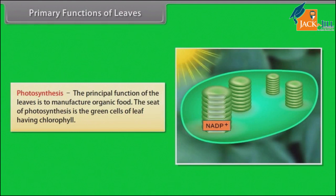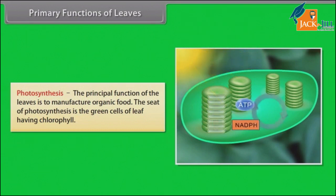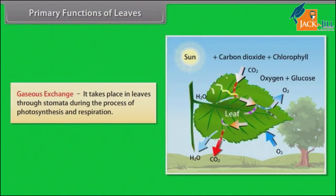Primary functions of leaves include: photosynthesis — the principal function is to manufacture organic food; the seat of photosynthesis is the green cells of the leaf having chlorophyll. Transpiration — the loss of water from the leaf surface; it is necessary to create force or tension in the water column and thus cause ascent of sap. Gaseous exchange — it takes place in leaves through stomata during the process of photosynthesis and respiration.